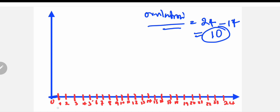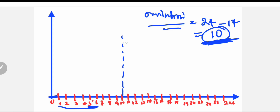So on the x-axis, 24 minus 14 gives you 10, meaning ovulation is around the 10th day of the cycle. The 10th day of the cycle is marked here on the chart.